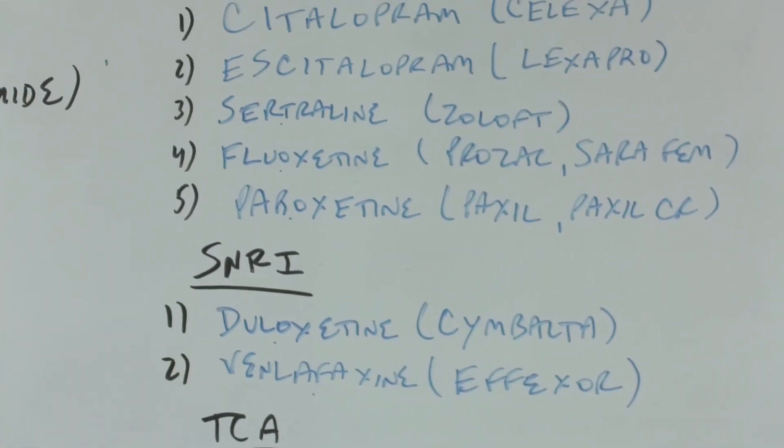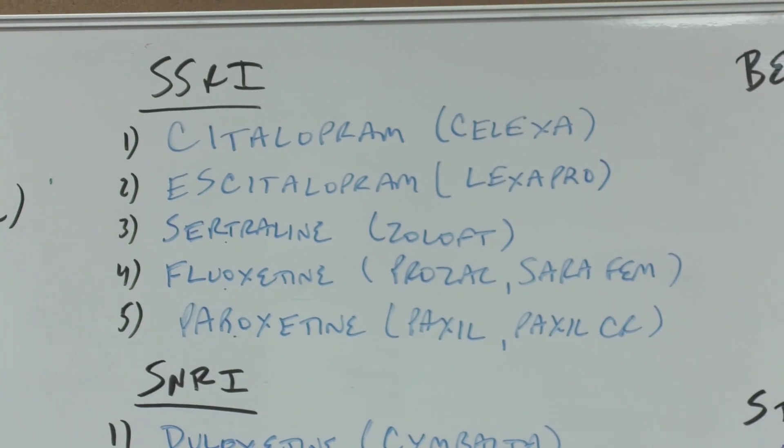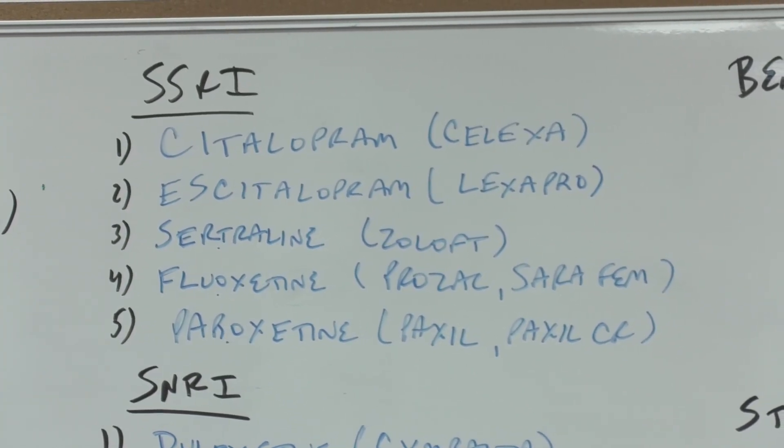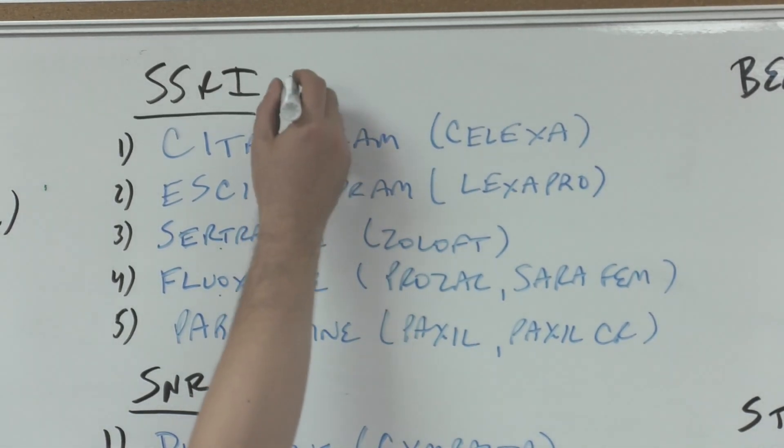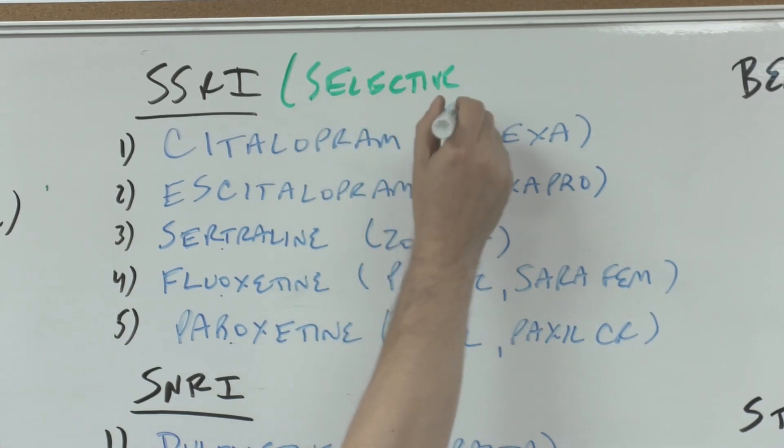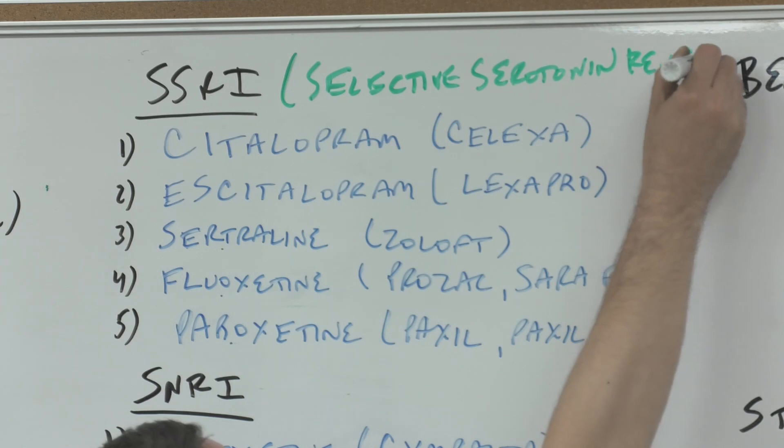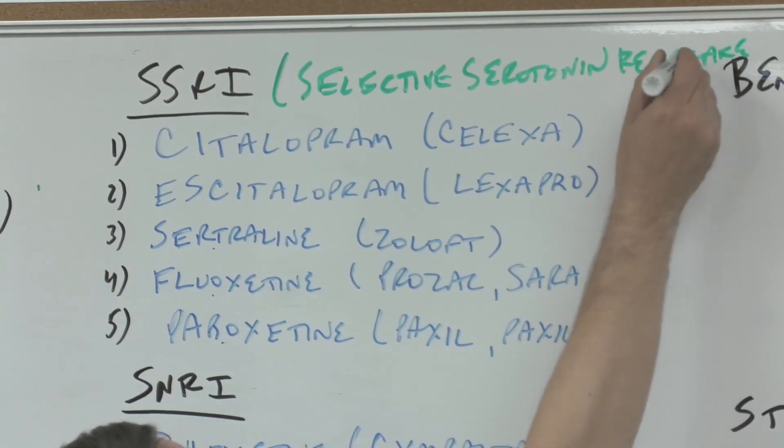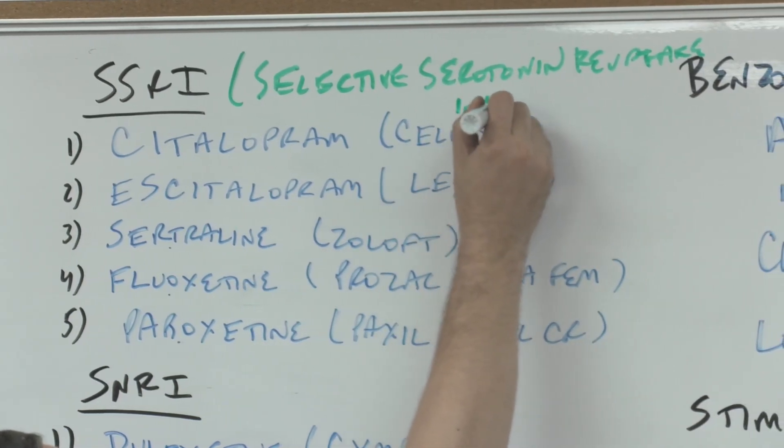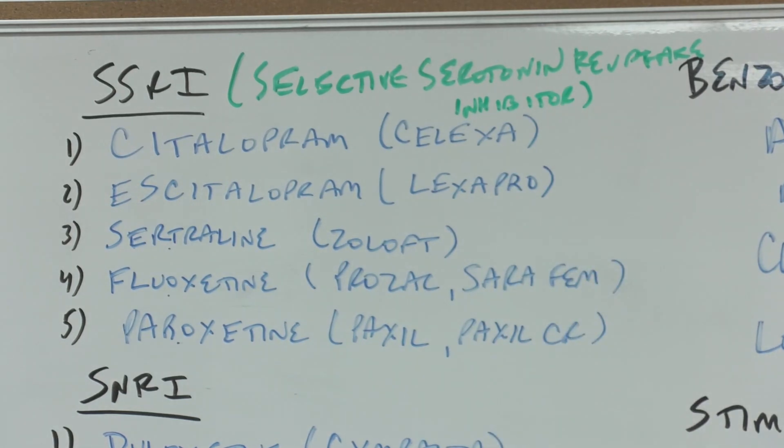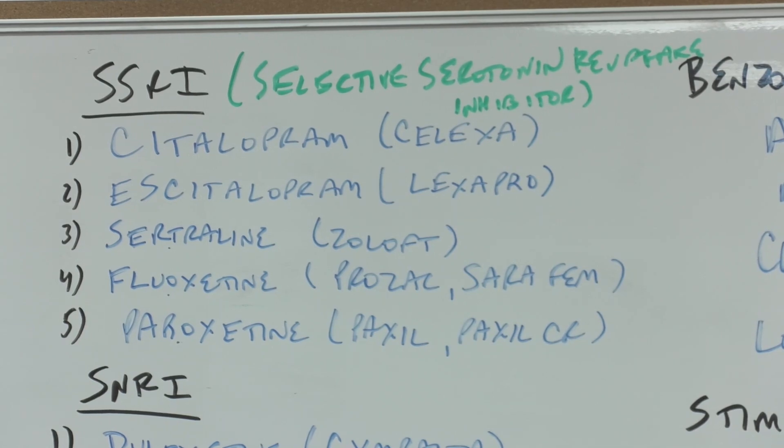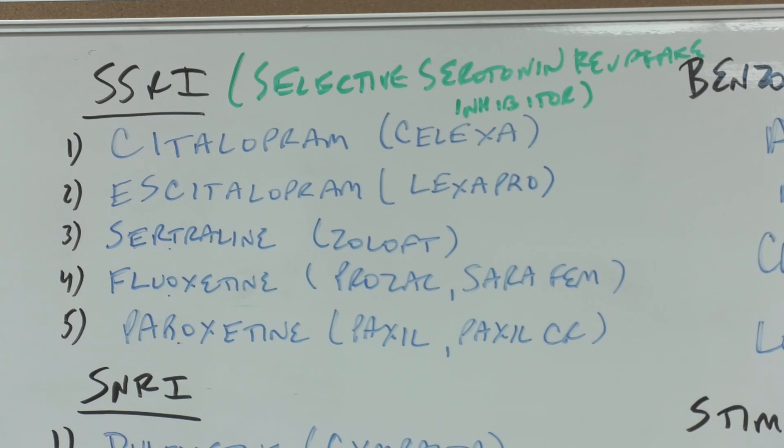The first thing that throws students off is the classifications SSRI, SNRI, TCA, MAOI - each one has its own acronym. An SSRI is a selective serotonin reuptake inhibitor. That means that serotonin is going to normally be reuptaken or recycled, but instead we inhibit that recycling. It stays in the synapse and is supposed to make the patient happier.